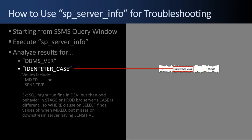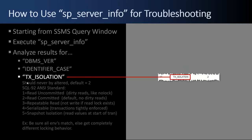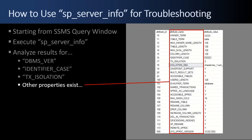Definitely look at SP_ServerInfo and identifier case. Finally, the attribute TX_Isolation. That shouldn't be altered — it should be left alone. It defaults to no dirty reads. There might be reasons to change it if you know what you're doing, but what you really want to look out for is that across all your environments — dev, test, stage, prod — the TX_Isolation is the same. Otherwise you'll get totally different behavior with deadlocking and blocking. If one environment has a lot of locking issues and another doesn't, go look at SP_ServerInfo and see if anyone changed the TX_Isolation settings. There are many other server properties that exist, and some may be important to you when comparing across environments.